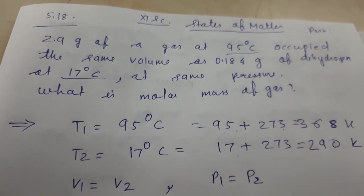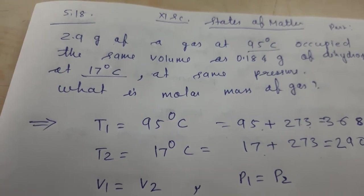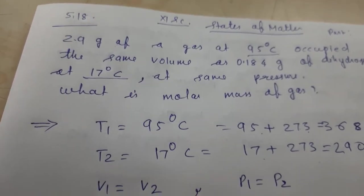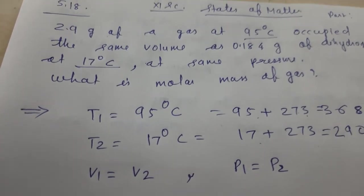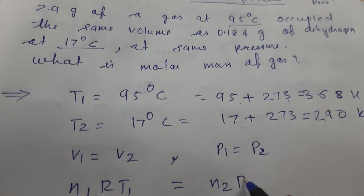So we know that, and what we have to find out is molar mass of the gas. So PV equals NRT and P and V both are same. So what we can write, children?